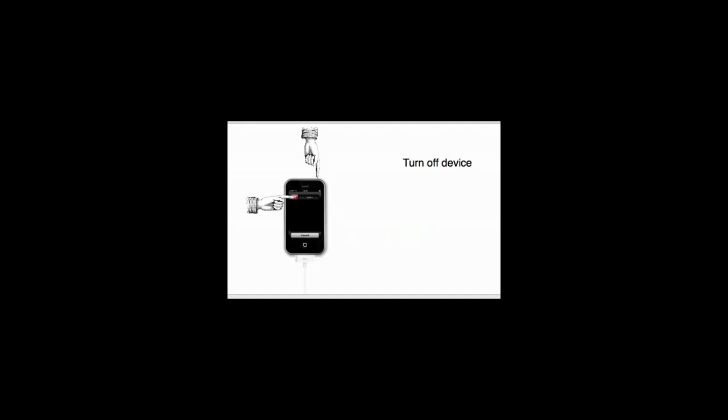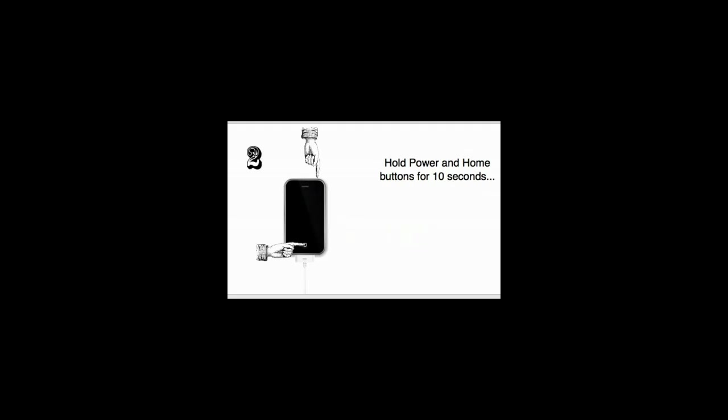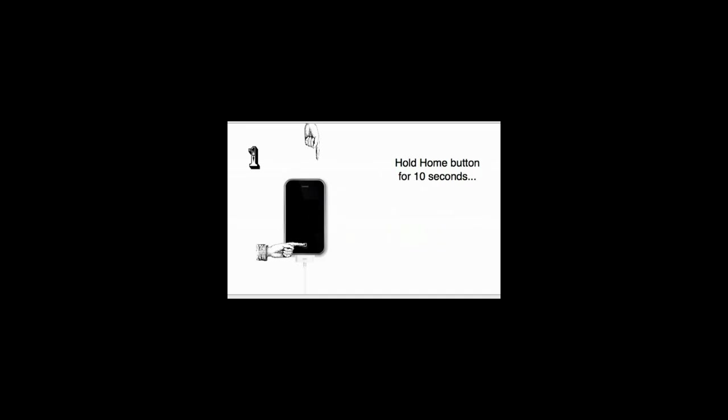Make sure your device is connected to your computer via USB cable and the device is on. Press and hold the power button to power it off. Once it's off, press and hold the Home and Power buttons at the same time for 10 seconds. Then release the Power button and continue to hold the Home button for 10 more seconds — and you're in DFU mode.